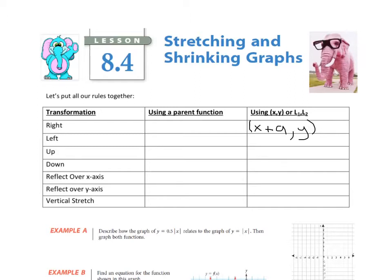And if I'm looking at L1 and L2, then I know that my L3 is my x, so I'm going to take L3 equal to my L1 and add that a value to that as well. If I'm looking at moving left, I'm going to subtract from my actual x values. So that means x minus a, because I'm subtracting a value, and y stays the same — or L3 equal to L1 minus a.